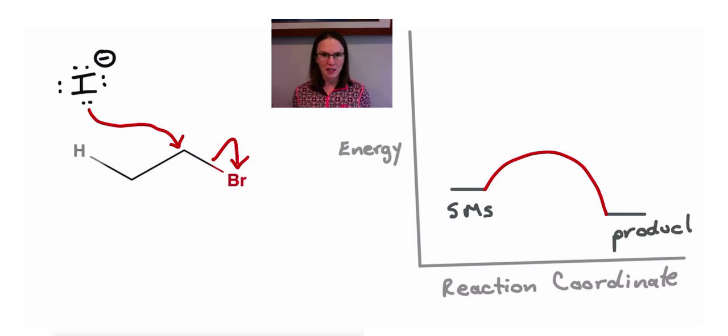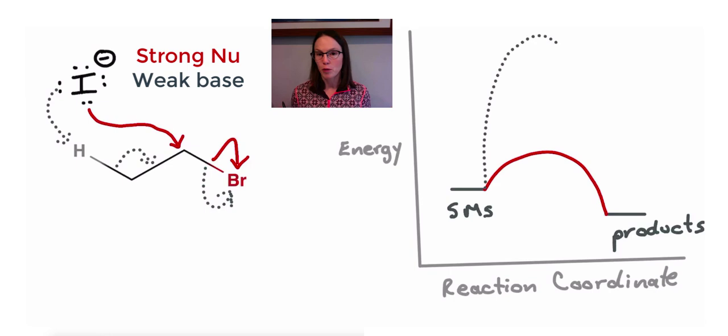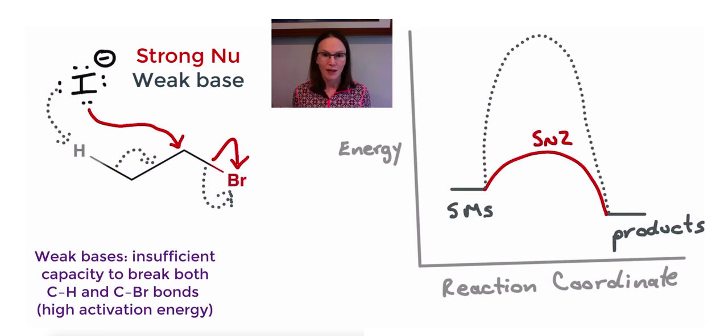Okay, so let's look at the extreme cases. Say we have a strong nucleophile but a weak base. In order to have sufficient energy for an E2 reaction, we need a strong base. And so in that case, the SN2 reaction will be favored.